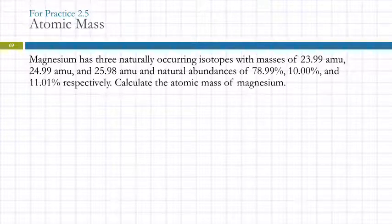So let's do an example. Magnesium has three naturally occurring isotopes. They're giving us the masses, 23.99, 24.99, and 25.98. And then they give us the natural abundances, 78.99%, 10%, and 11.01%, respectively. So that word respectively means that they're giving us the percent abundances in the same order as they gave us the atomic masses. And so we're asked to calculate the atomic mass of magnesium.